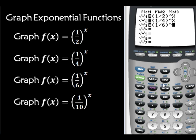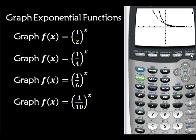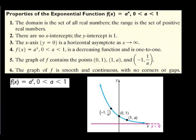Let me graph those together. And look at that — the larger the denominator gets, the closer it is to the y-axis. They all intersect at (0, 1). The properties of exponential functions when a is between 0 and 1: the domain is the set of all real numbers; there are no x-intercepts; the y-intercept is 1; the x-axis (y = 0) is a horizontal asymptote as x approaches infinity; f(x) = a^x is a decreasing function and is one-to-one; the graph contains (0, 1), (1, a), and (-1, 1/a); and is smooth and continuous with no corners.